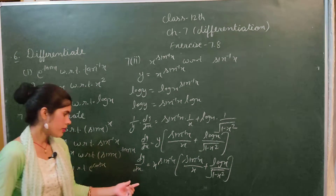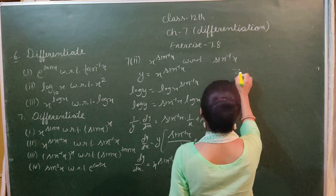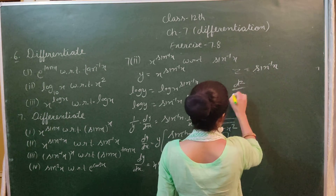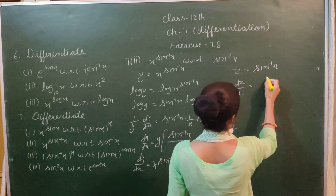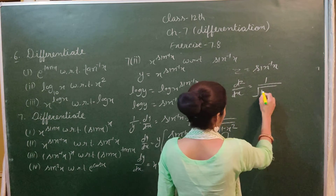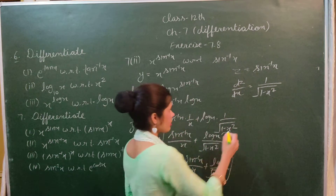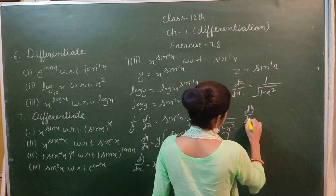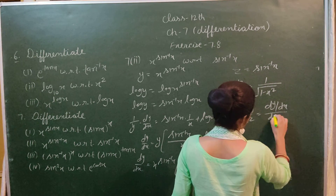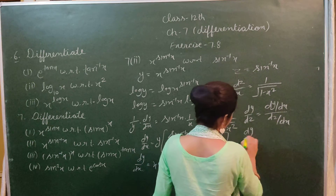Now we let z = sin⁻¹x, and differentiating z with respect to x gives dz/dx = 1/√(1 - x²). Then dy/dz = (dy/dx) divided by (dz/dx).